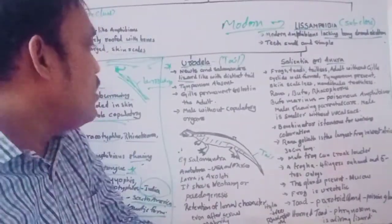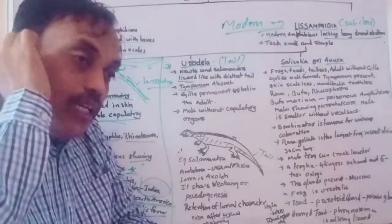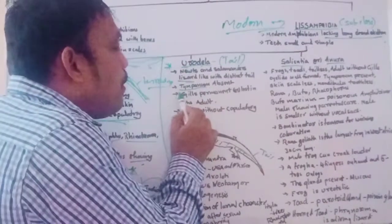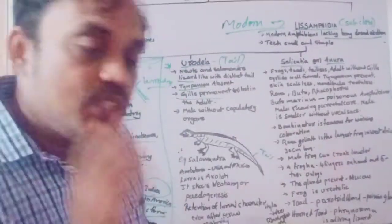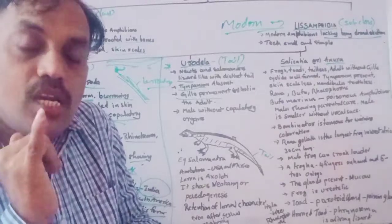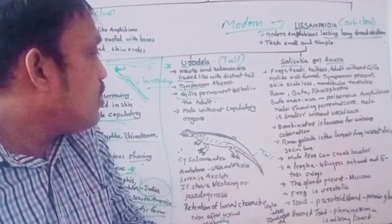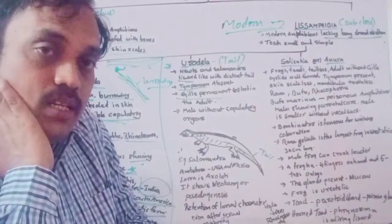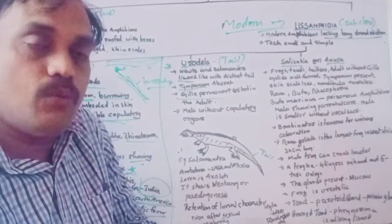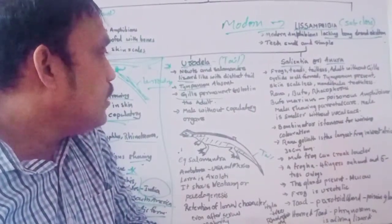In Urodela, the tail is long and distinct. The tympanum — the eardrum — is absent in these animals. Gills are permanent, useful for respiration. While in amphibians generally we see buccal, cutaneous, and pulmonary respiration, in Urodela the gills are permanent throughout the lifetime.